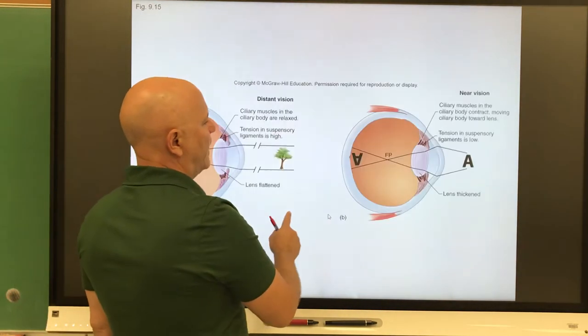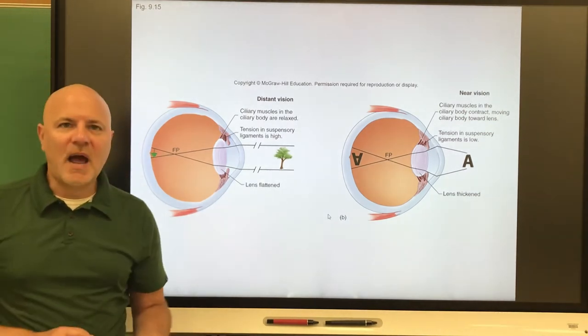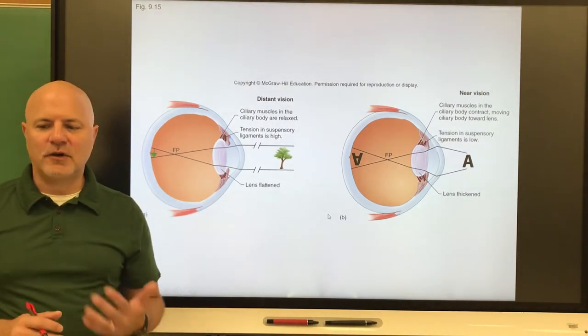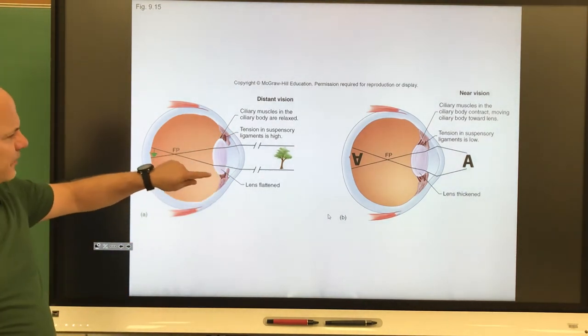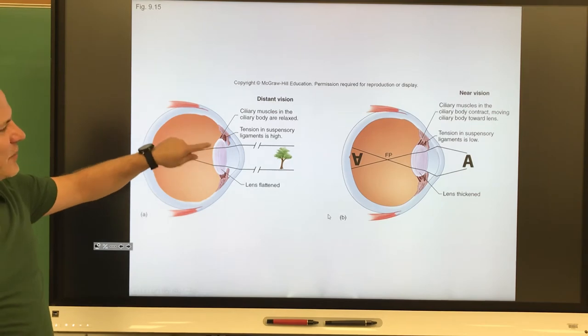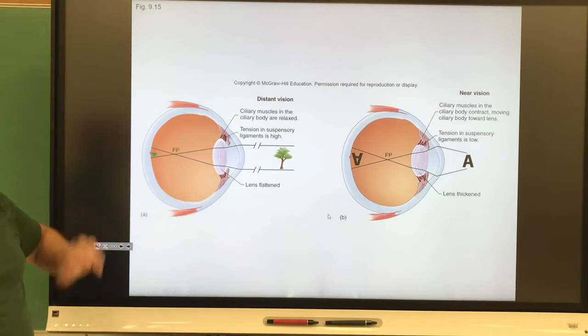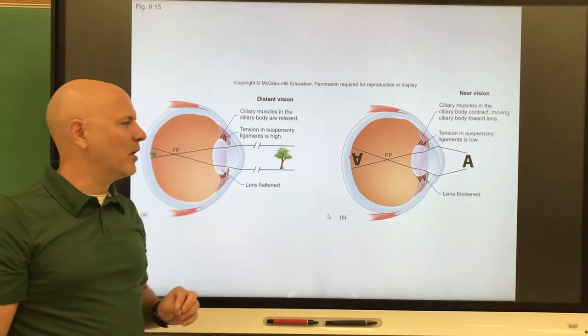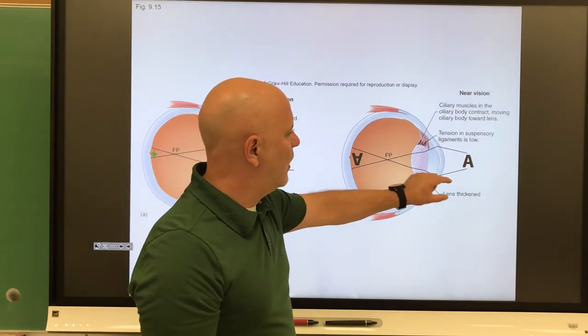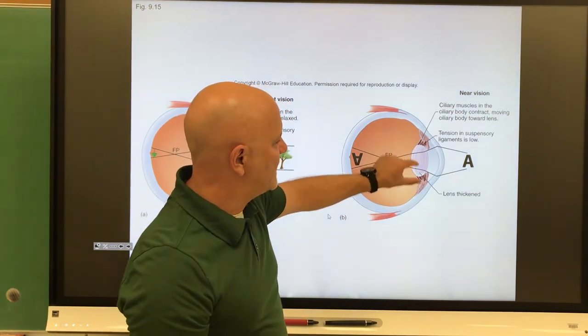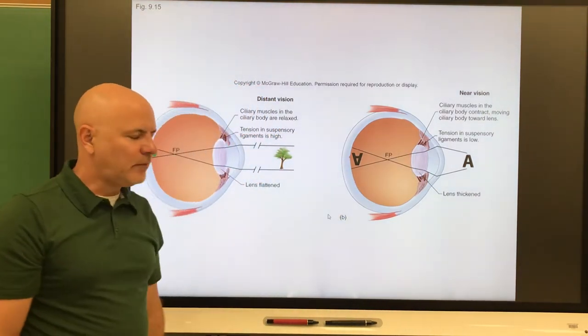If I go to this picture here, you can see this. Accommodation is adjustment of the lens for close or distant vision. This is showing distant vision, like looking at a tree far away. What happens here is our lens flattens out for that distant vision, and that helps get that image onto our retina or the part of our eye that we see. If we look at something up close though, we cause that lens to thicken up. Our lens thickens up for that close vision.